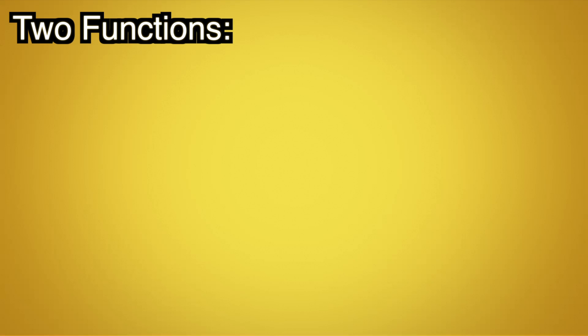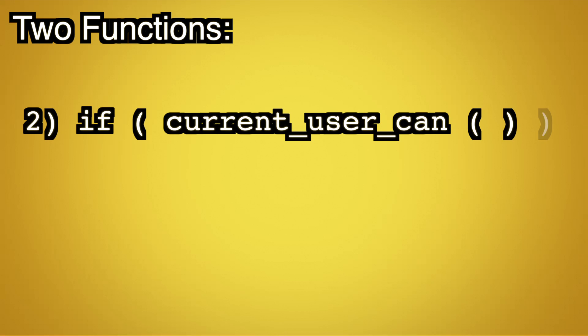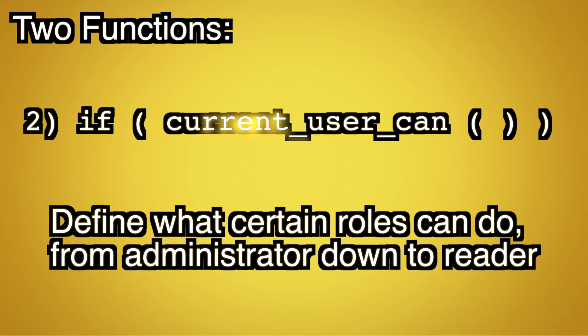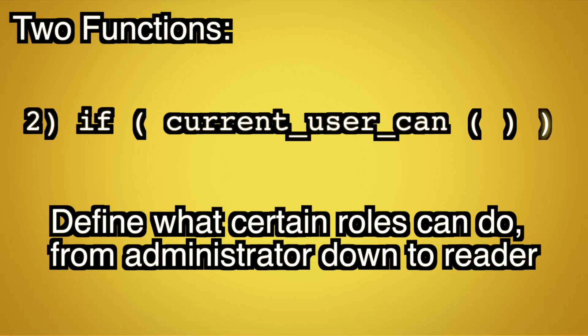There's another function called CurrentUserCan, and that's a Boolean conditional check as well. But you're able to check different capabilities for different users. You can output content simply for subscribers only, or all the way up to administrators. You can really tailor this custom functionality to your needs.